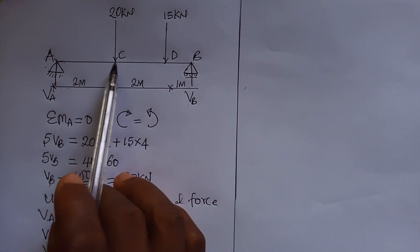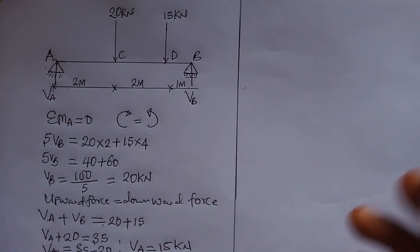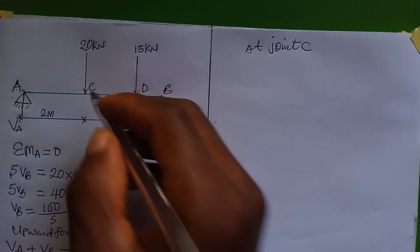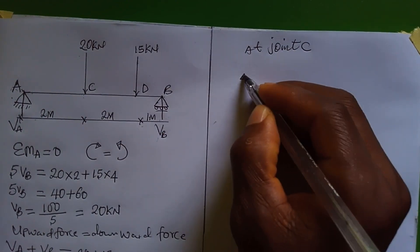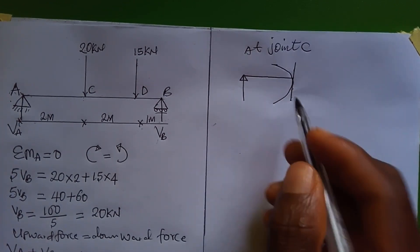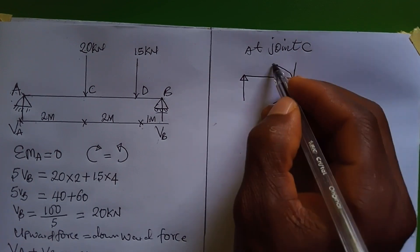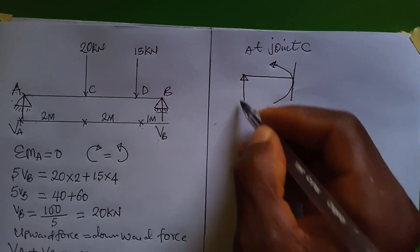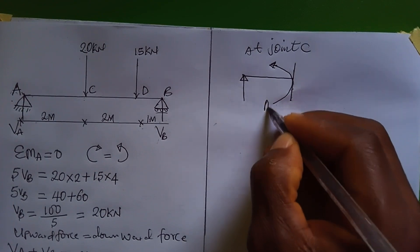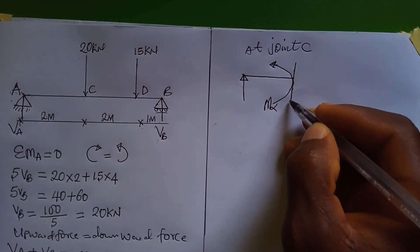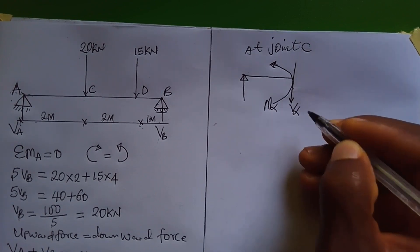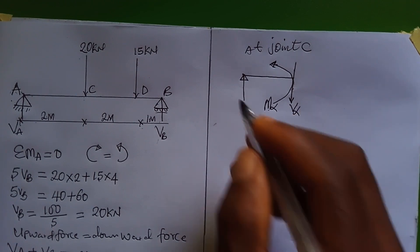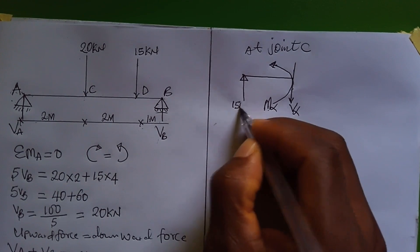At joint C, if we cut the section there, we'll have a moment. This drawing here is a moment, and it should move in the opposite direction so that the beam is balanced. Let's call this M_alpha, and the vertical force going down is V_alpha. M_alpha gives the bending moment expression, and V_alpha gives the shear force expression.